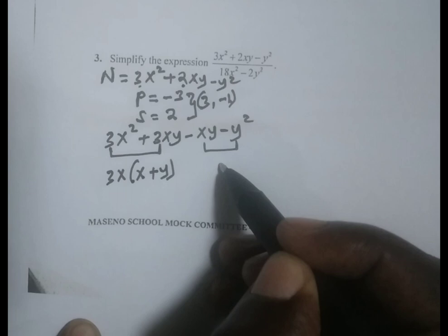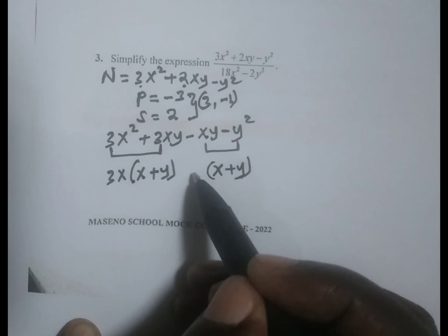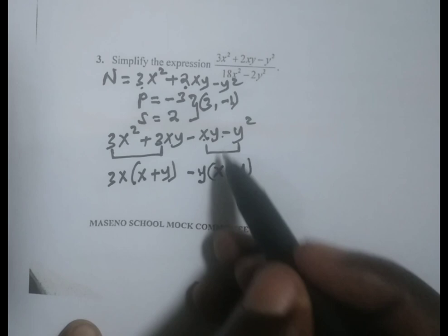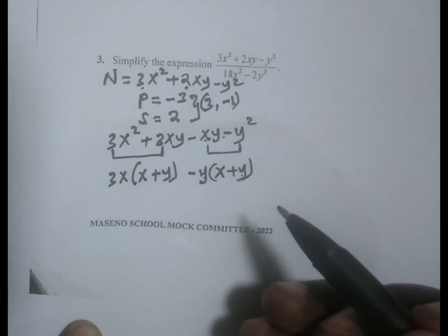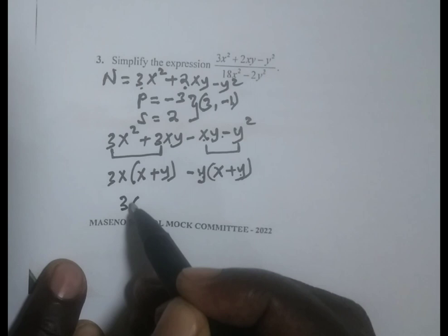This bracket is the same as this one, x plus y. Then we look at these other parts. Here we are going to have negative y, such that negative y times x gives negative xy. Negative y times positive y gives minus y squared. Then we can now connect the two. This one is going to be 3x minus y.